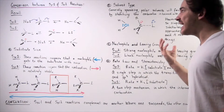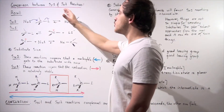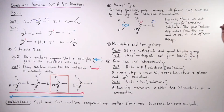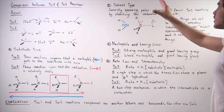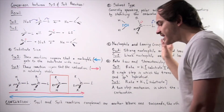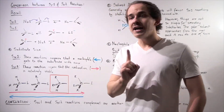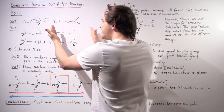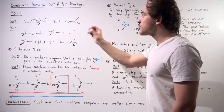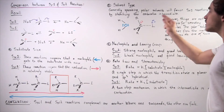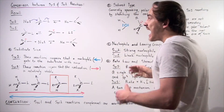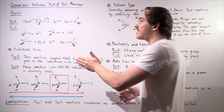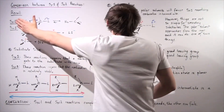Now let's describe how the solvent influences our SN1 and SN2 reactions. Generally speaking, polar solvents will favor SN1 reactions by stabilizing the carbocation intermediate. Polar solvents will also stabilize SN2 reactions, because the transition state has partial charges that are stabilized by polar solvents. But because the SN1 reaction develops intermediates with full charges, polar solvents will stabilize SN1 reactions more than SN2 reactions.